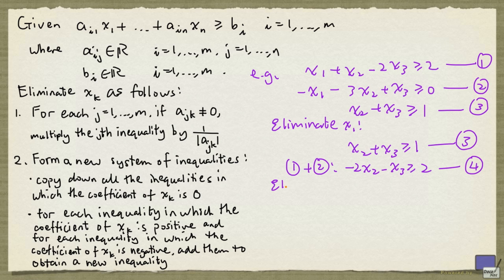We now proceed to eliminate x2. Notice that the coefficient of x2 here is not 1, and so we multiply this inequality by 1 half, and that will give us minus x2 minus 1 half x3 greater than or equal to 1. And the other inequality we just copy down.